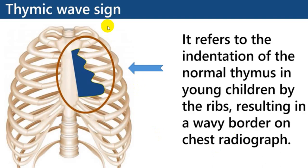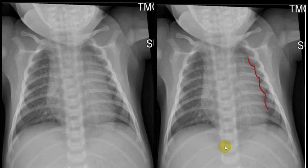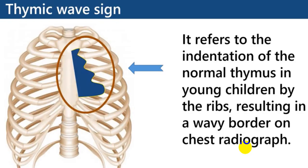The thymic wave sign refers to indentation of the normal thymus in young children by ribs, resulting in a wavy border on the chest radiograph. You can see this on the left border drawn with a red line — the wavy border because of rib indentation is the thymic wave sign.